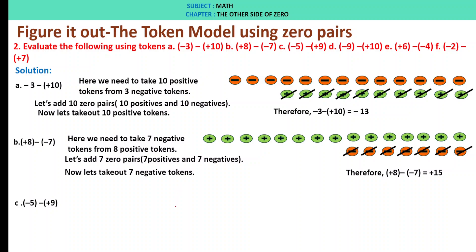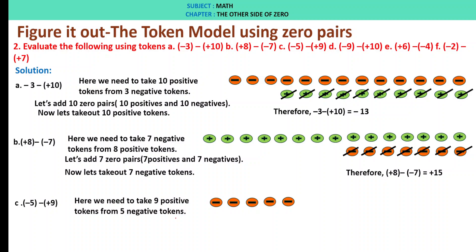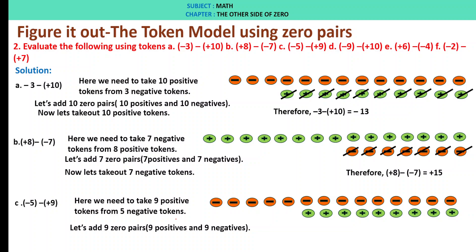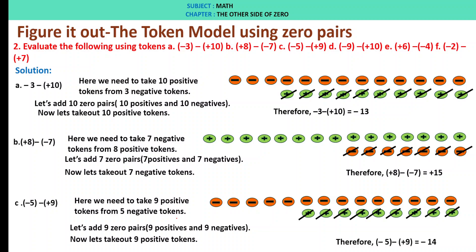C: minus 5 minus of plus 9. We have 5 negative tokens and need to take 9 positive tokens from them. Let us add 9 zero pairs — 9 positive and 9 negative. After adding, we take out 9 positive tokens and are left with 14 negative tokens. Therefore, minus 5 minus of plus 9 is minus 14.